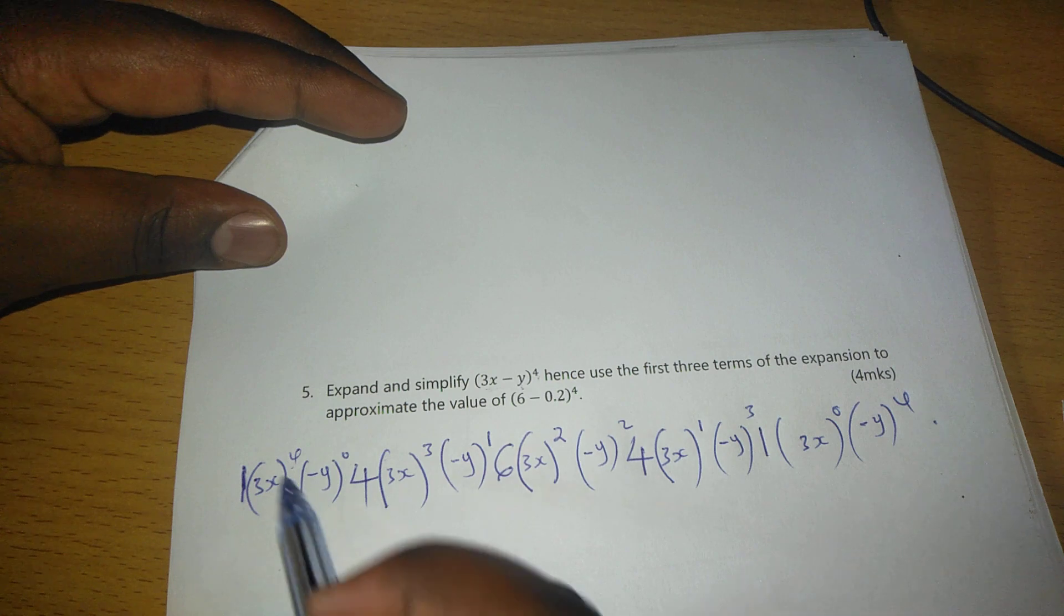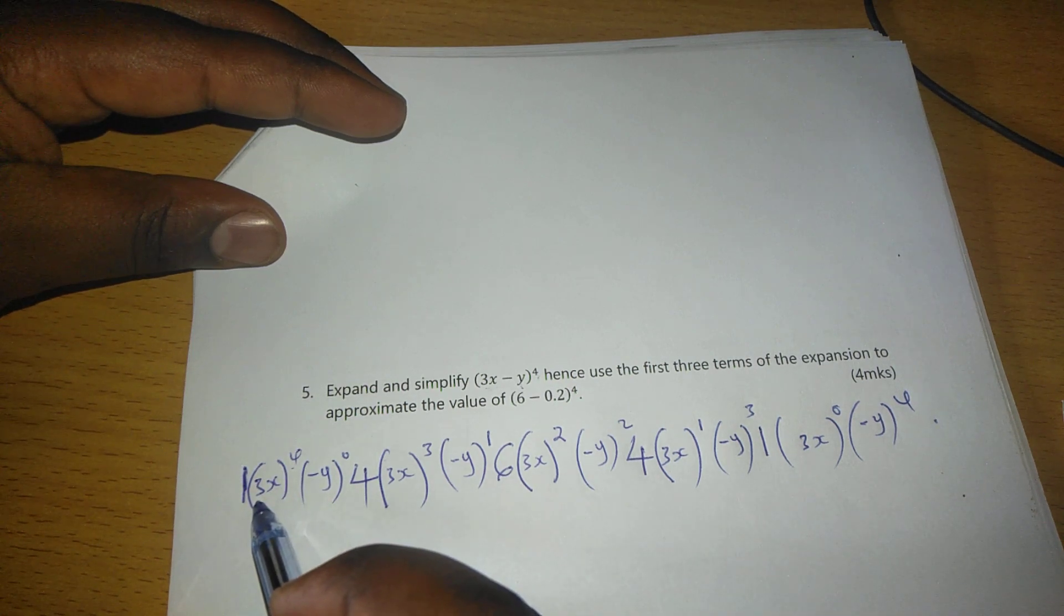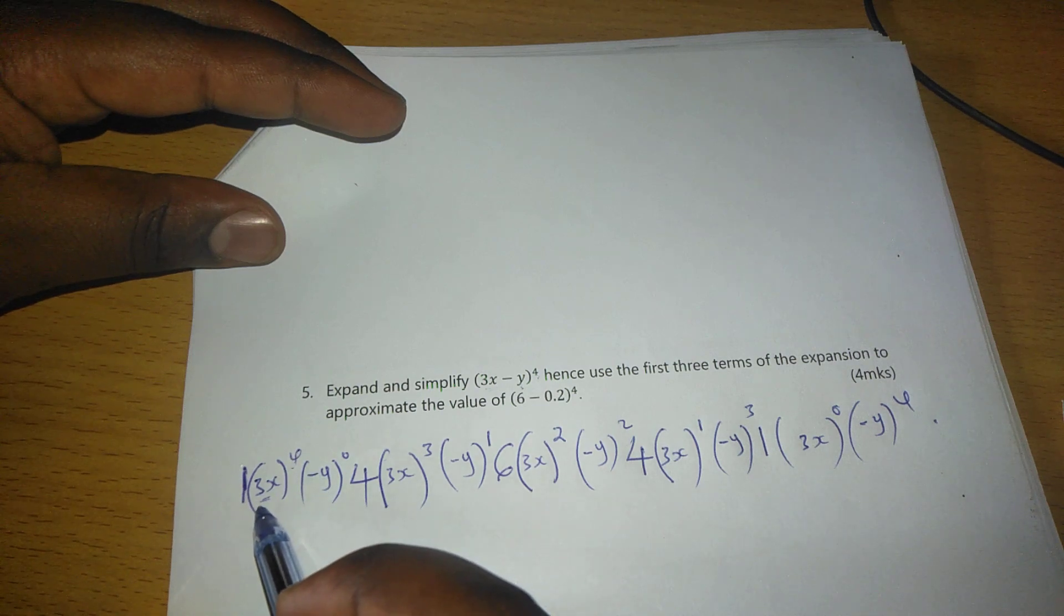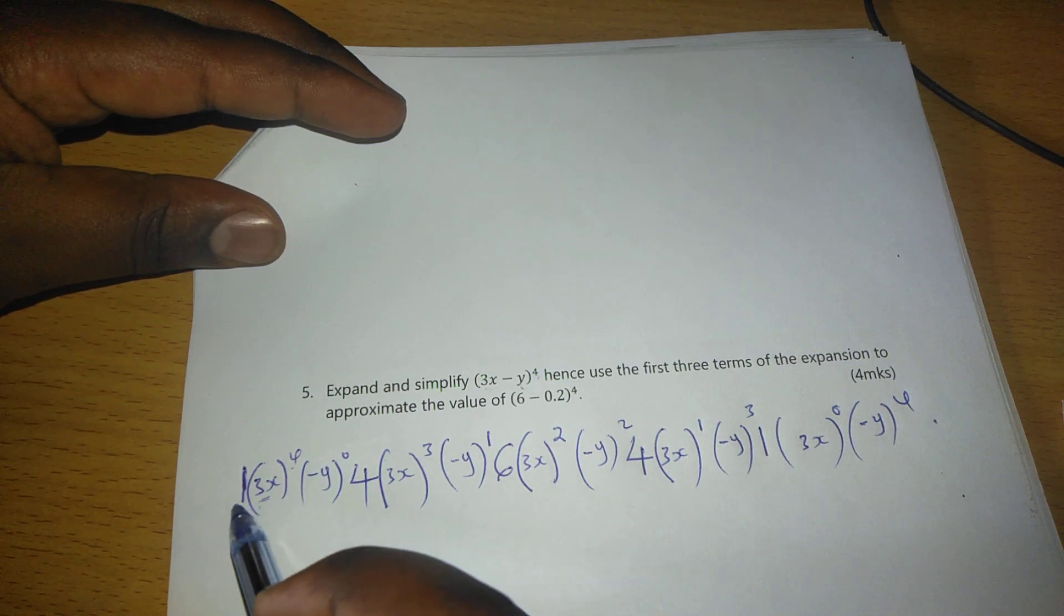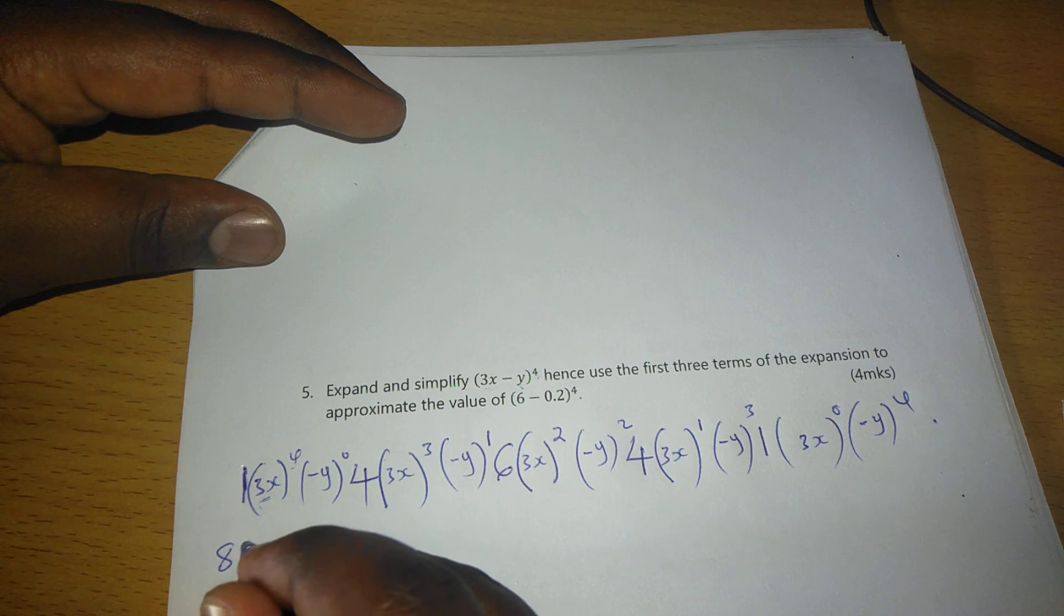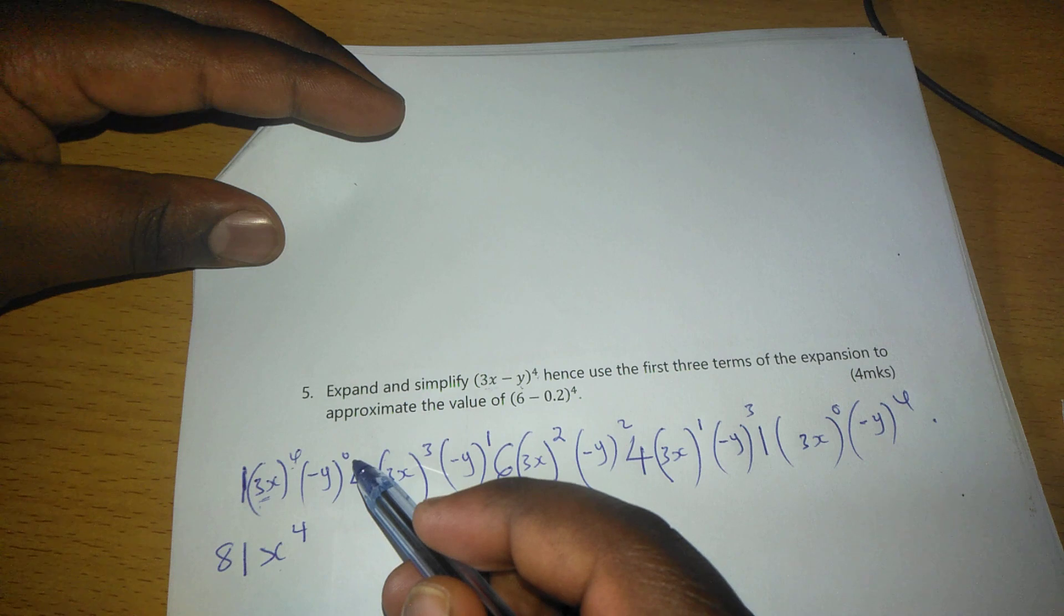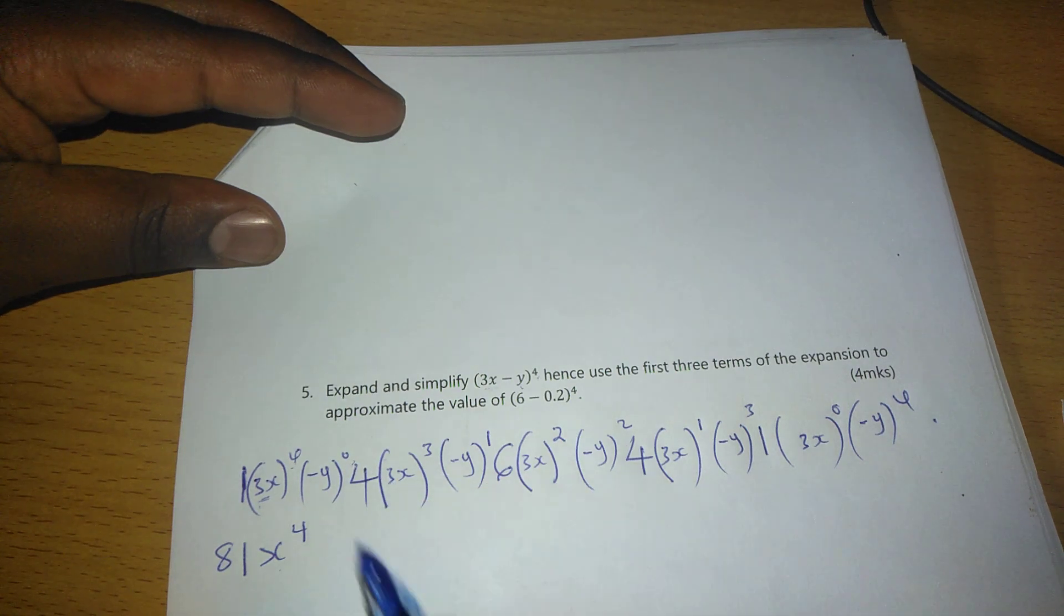After this, now we can open brackets by having 3 raised to 4. Remember, we are raising whatever is in brackets to power 4. So 3^4 is 81 times 1, it remains 81x^4. Since anything raised to 0 is 1, so we are multiplying with 1.